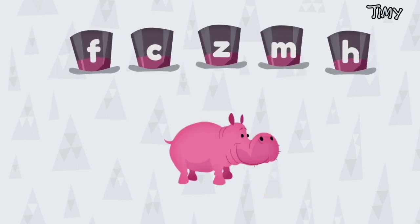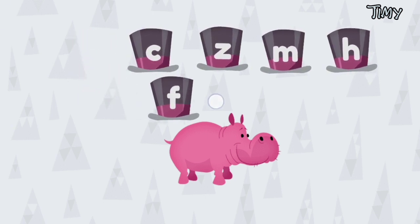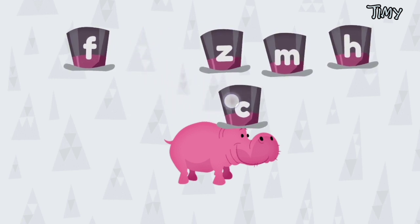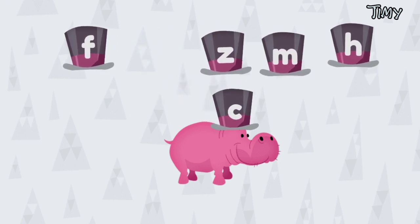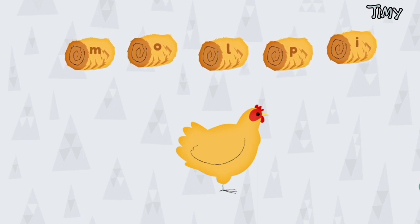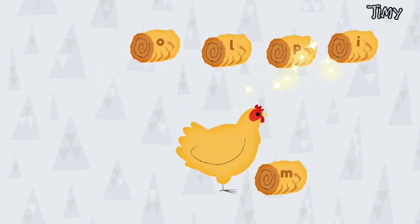Put the hat with the letter C on the hippo. Good job! Give the hen the hay with the letter M. Good thinking, good thinking!